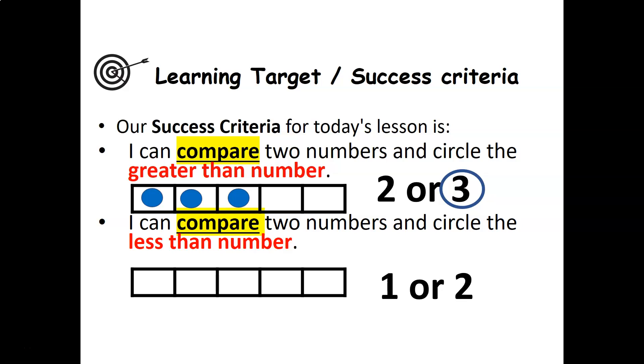And I know that I am successful if I can compare two numbers and circle the less than number. So sometimes it's going to ask us to circle the more than, greater than, and sometimes it's going to ask us to circle the less than. So how many red circles do you see? Counters? One. Which number is less? One or two? One. Excellent.